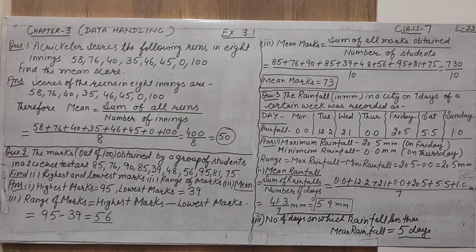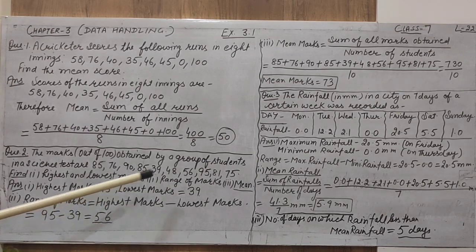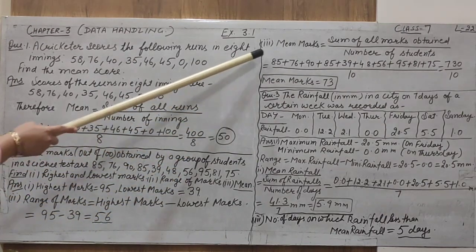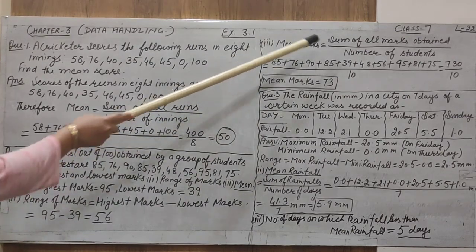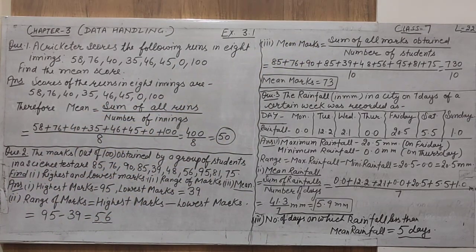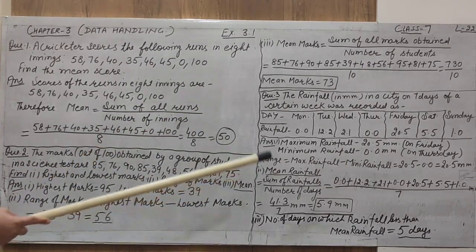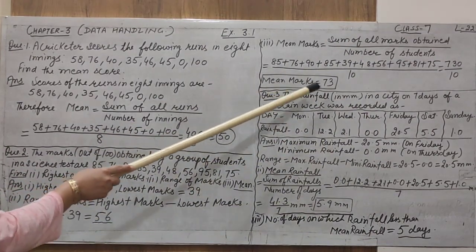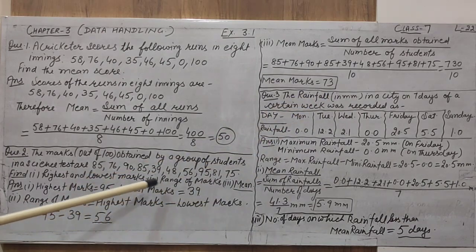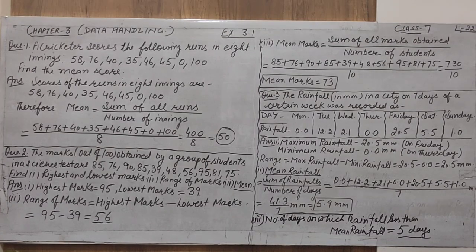I hope you understand the questions from these two examples — highest observation, lowest observation, range, and mean. For the first example we found the mean of runs; in this second example we found the mean of marks. The formula is the same; only the context differs. The mean marks are 73, meaning some marks are more than 73 and some are less.